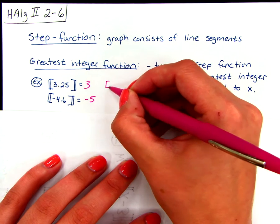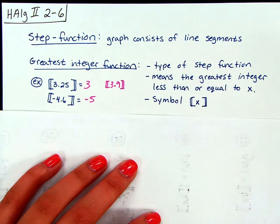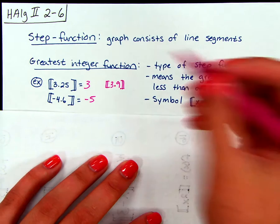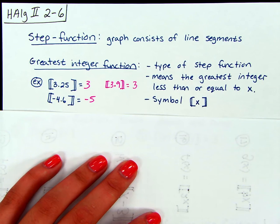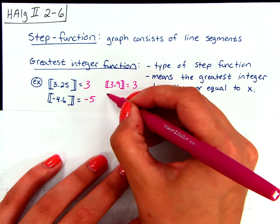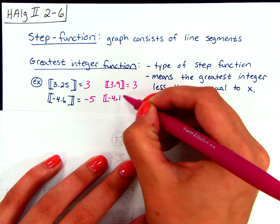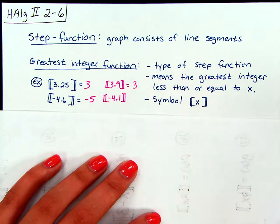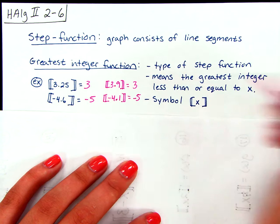So let's say I had the greatest integer of 3.9. We still want to round down to the next integer. And again, when I say integer I'm talking about a whole number, either positive or negative. So even though it's 3.9, we still are going to round down to 3. Same thing, let's say that I had negative 4.1, we still round down. So again, to the left on a number line. So this is still going to be negative 5.